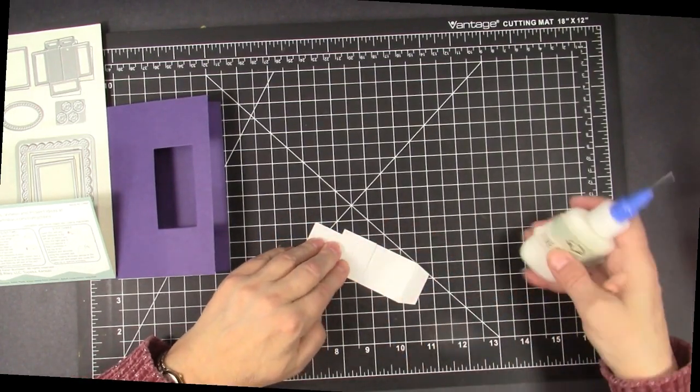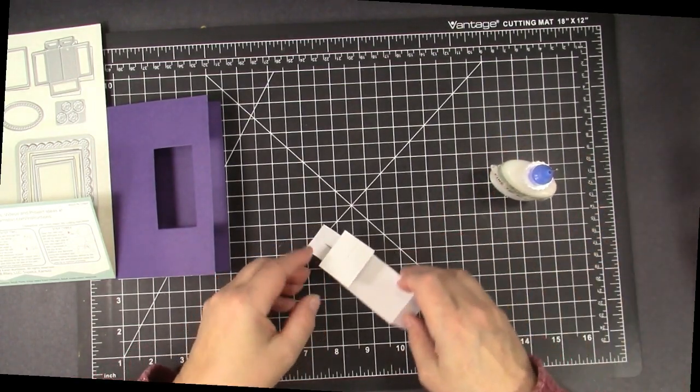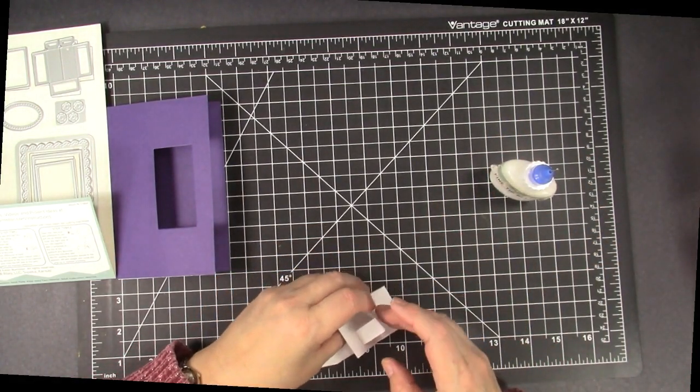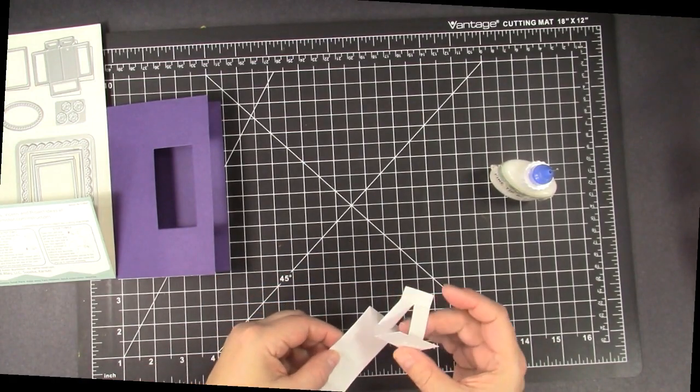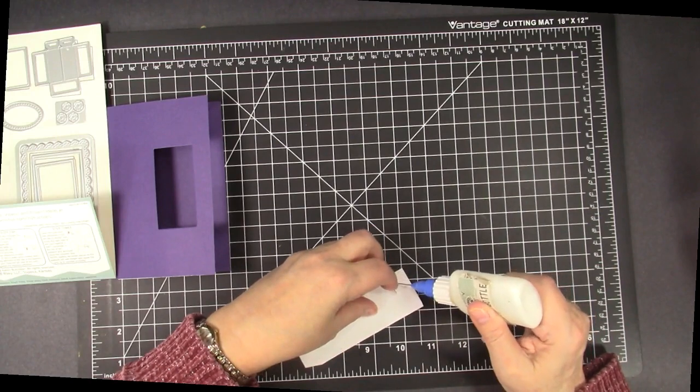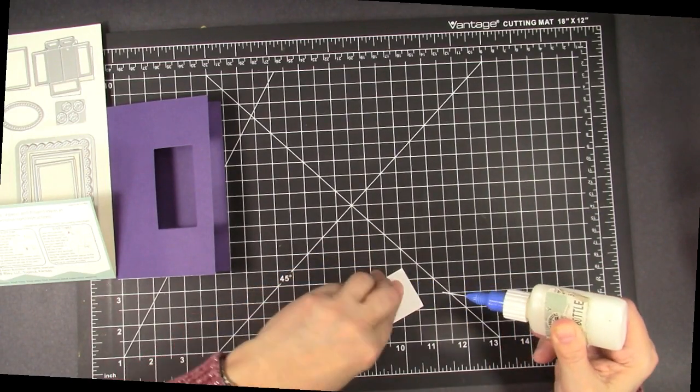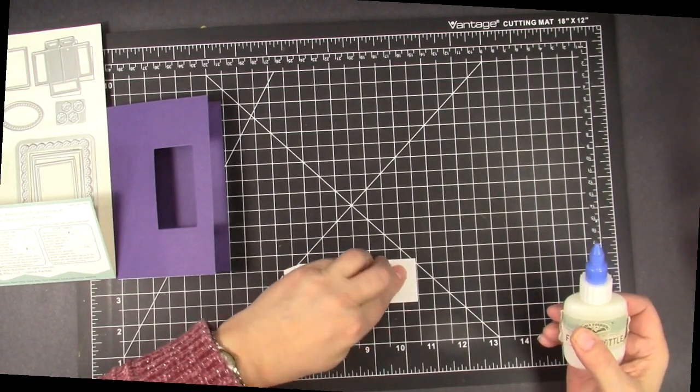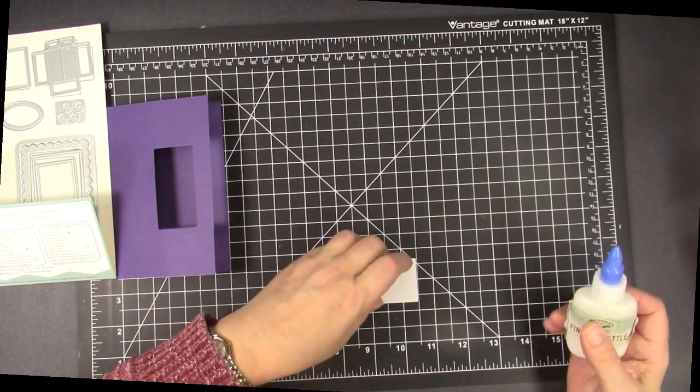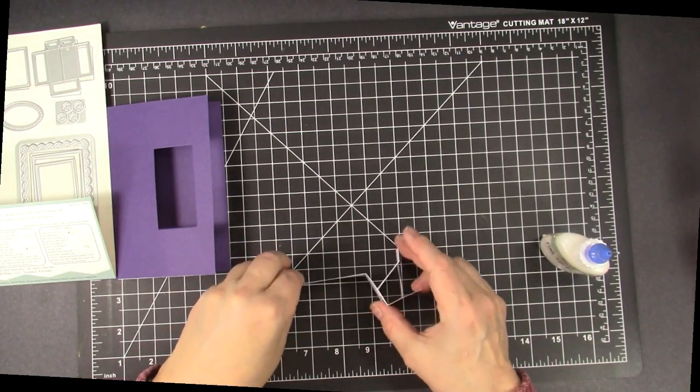And I'm using my favorite fine tip bottle and glue from Karen Burniston's website that she recommends. And of course all the links to all these products will be in my description box. So you have something that looks like that.